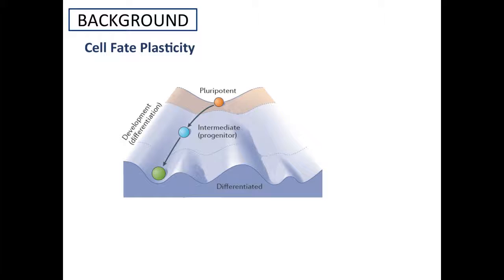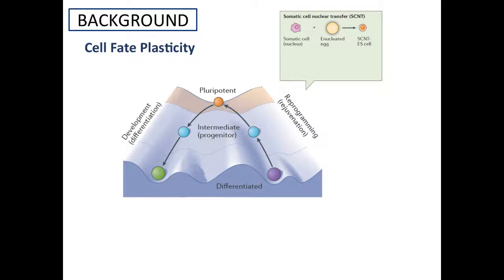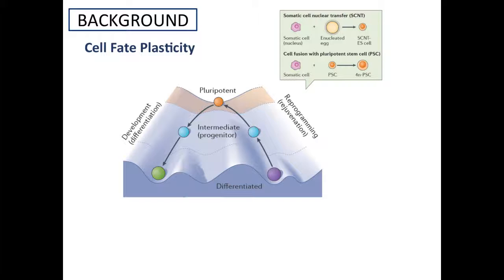Initially it was believed that acquisition of cell fate was unidirectional — from a pluripotent and immature to a mature and differentiated cell — that is, development is irreversible. However, a series of landmark experiments revealed that cell fate is flexible and reversible. The first experimental indication of cellular plasticity was reported through somatic cell nuclear transfers: transferring a somatic nucleus into an enucleated egg demonstrated that the somatic nucleus maintained all epigenetic information.